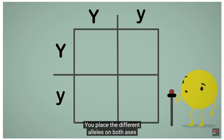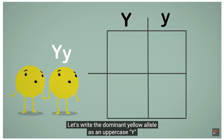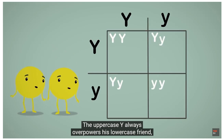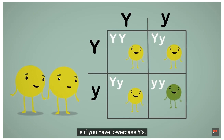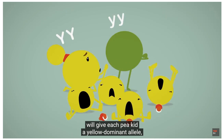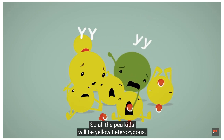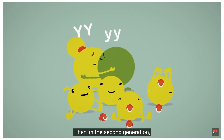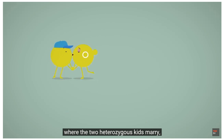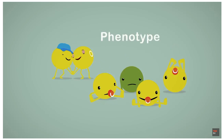To clearly visualize how alleles are distributed amongst descendants, we can use a diagram called the Punnett square. You place the different alleles on both axes and figure out the possible combinations. In Mendel's peas, the dominant yellow allele is written as uppercase Y and the recessive green allele as lowercase y. In the first generation all pea kids will be yellow heterozygous. In the second generation, where two heterozygous kids mate, their babies could have any of the three possible genotypes, showing the two possible phenotypes in a three-to-one proportion.